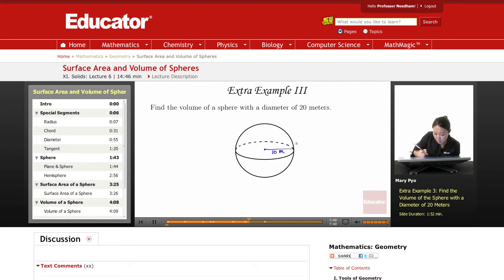10 meters. To find the volume, it's 4 thirds pi r cubed.